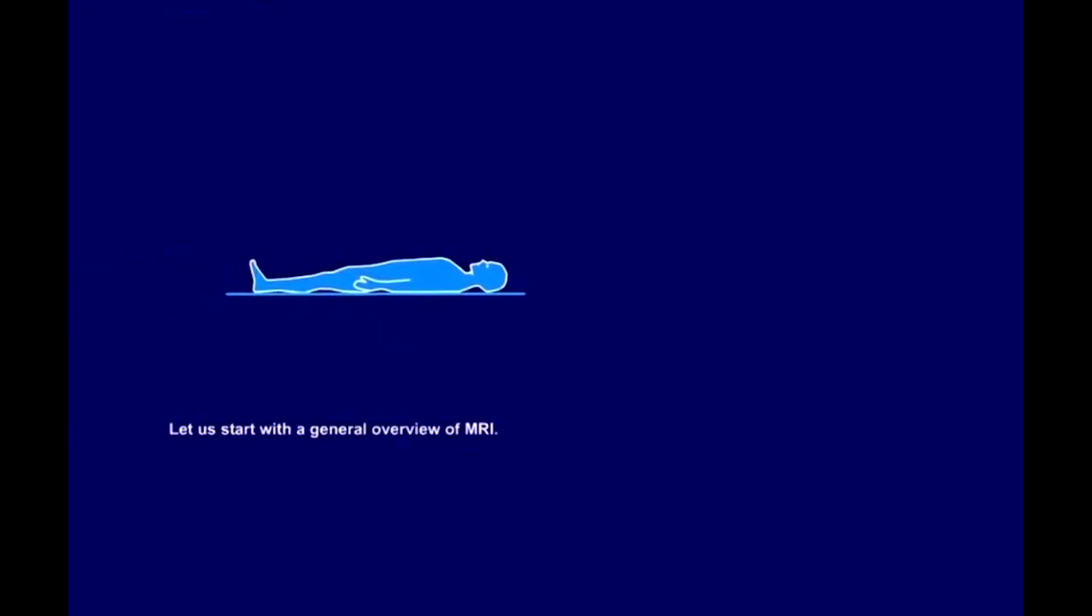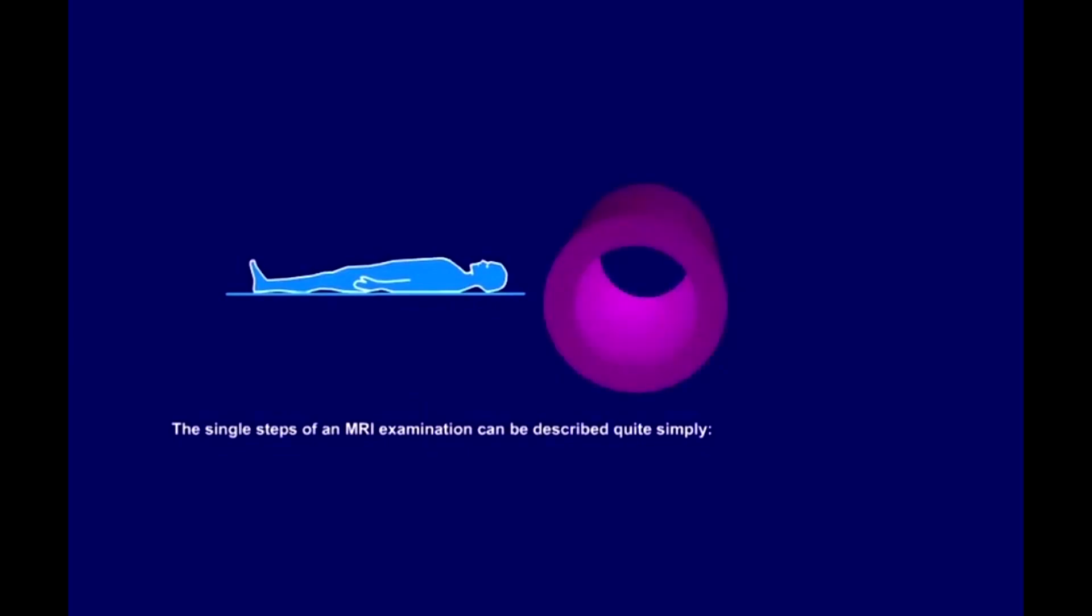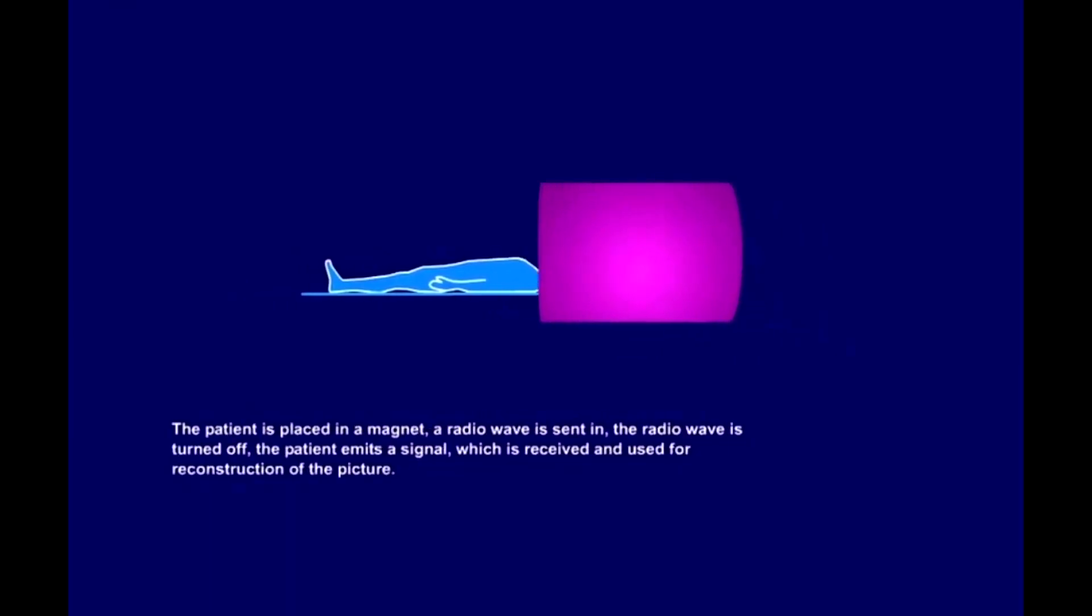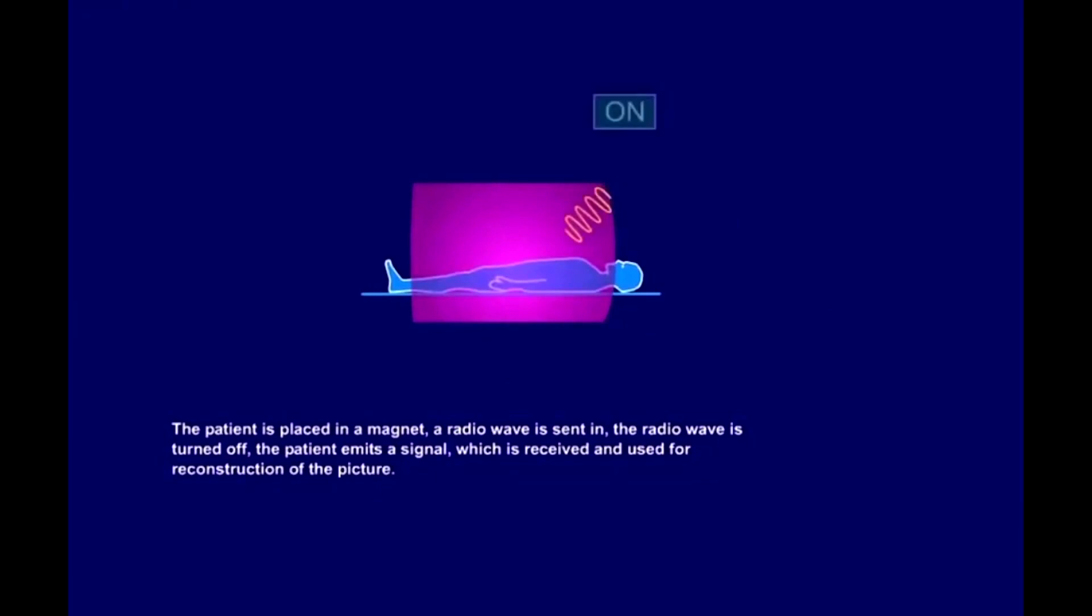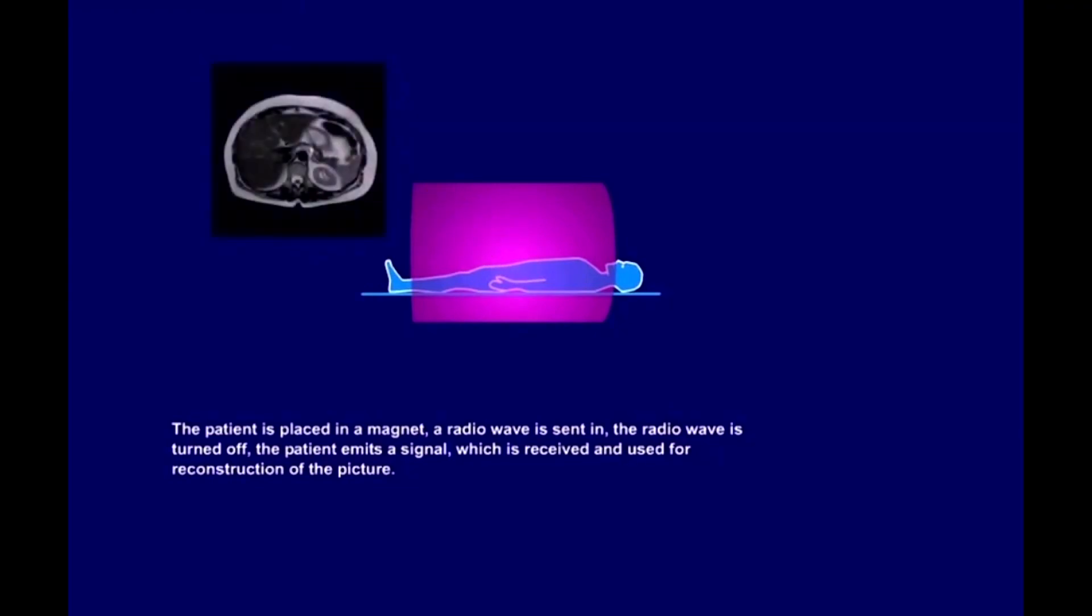Let's start with a general overview of MRI. The single steps of an MRI examination can be described quite simply. The patient is placed in a magnet. A radio wave is sent in. The radio wave is turned off. The patient emits a signal, which is received and used for reconstruction of the picture.